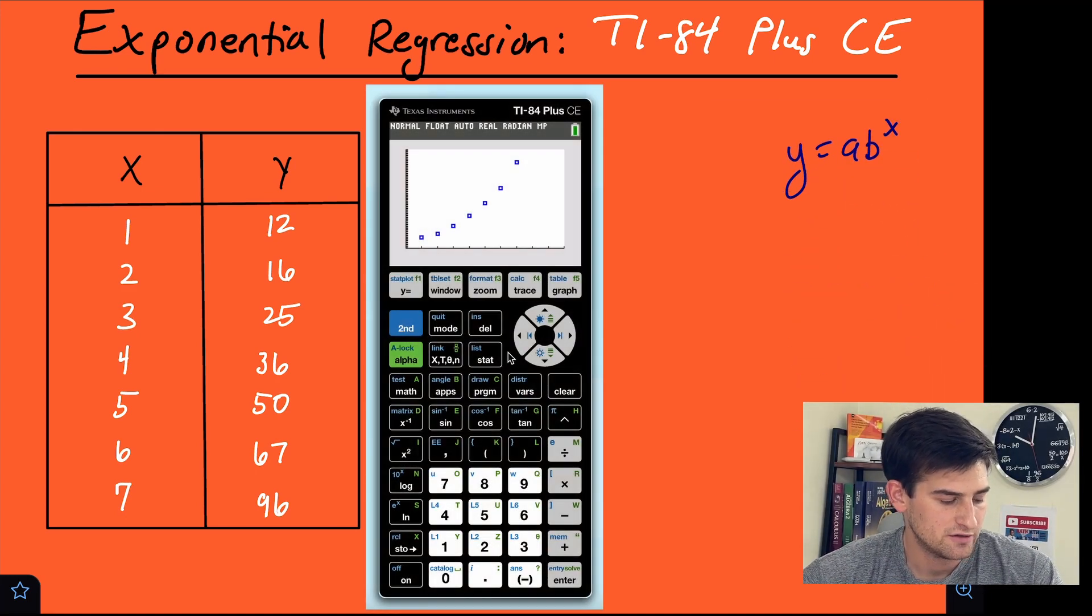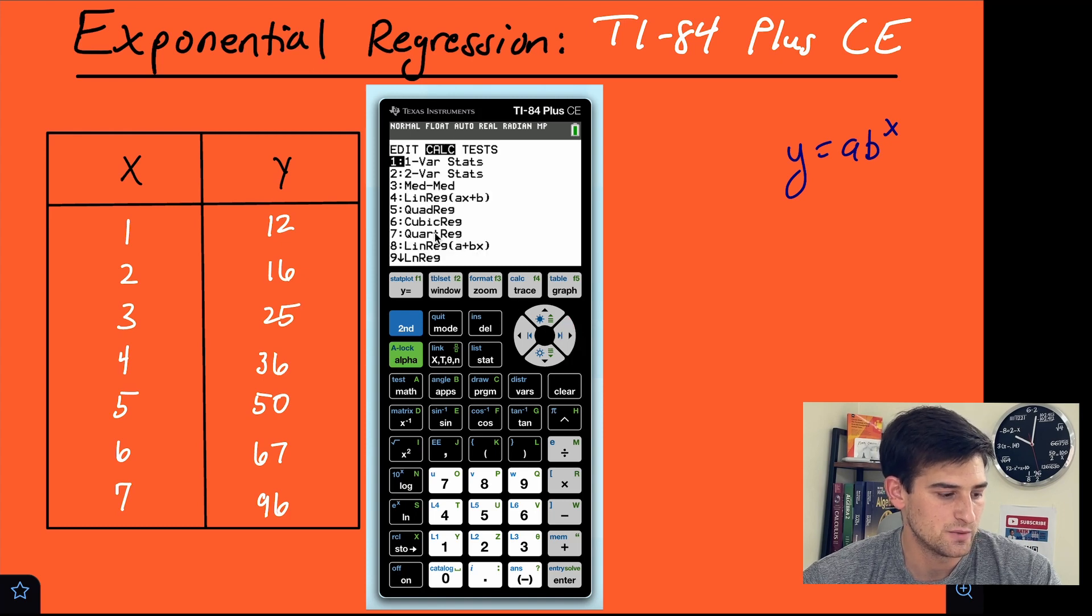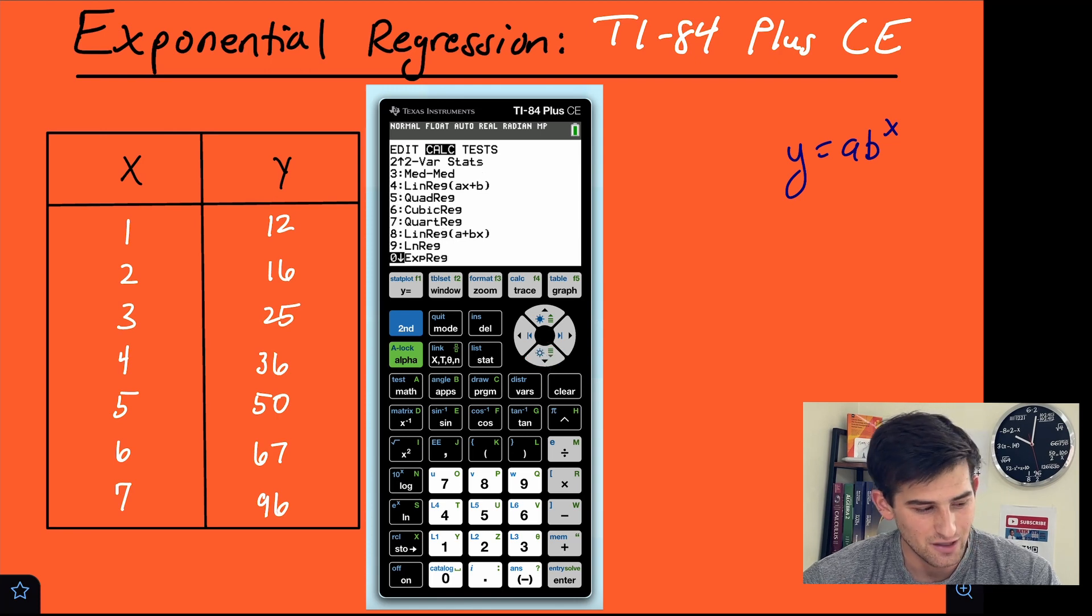And so now on our calculator, we're going to hit stat again. So we see our scatter plot and hit stat. Now we're going to go over here to calc. So calculate. And now we just want to find where it says exponential regression. So we go down here and that would be option number 10. It looks like a zero, but option number 10 there. So we hit enter.